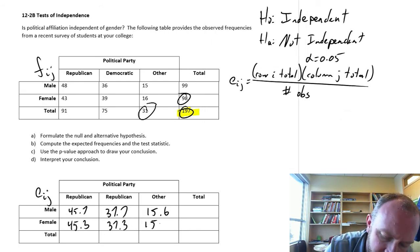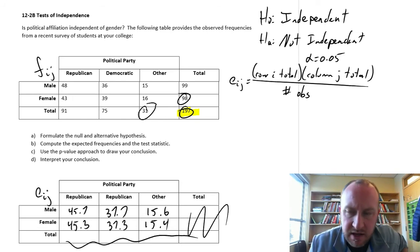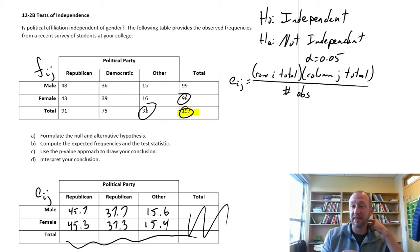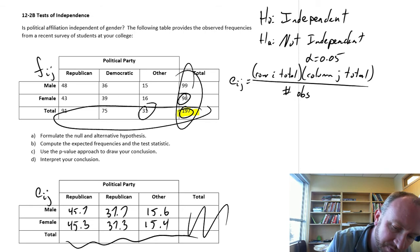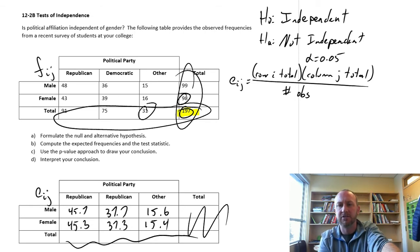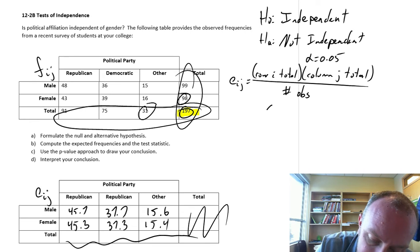That was relatively painless. We don't even need these totals, we can do those as a double check just to make sure everything worked out. We have all of our expected values. Now we need to calculate our test statistic.